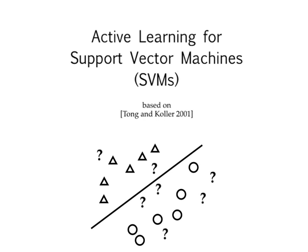Hello, and welcome to this brief tutorial on active learning for support vector machines. This tutorial can also serve as a brief introduction to active learning if you're familiar with machine learning but haven't seen active learning before. I'm going to assume some basic familiarity with SVMs — you don't have to remember the specifics of the algorithm or the derivations, but you should be familiar with notions such as the margin. This is based on work by Tong and Kohler in a paper from 2001, and there might be more recent work on active learning for SVMs, but I think this paper is enough to get a good idea what active learning is all about and how it can be applied to SVMs.